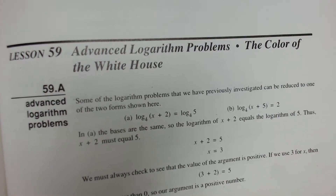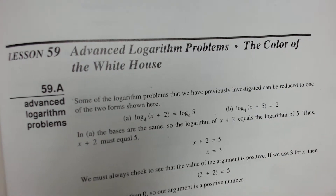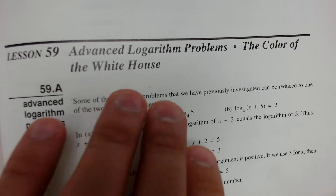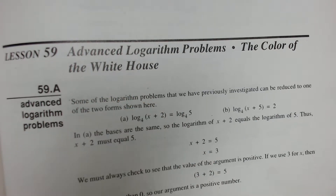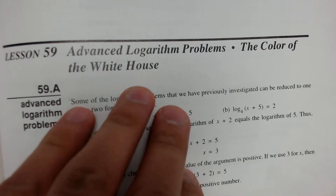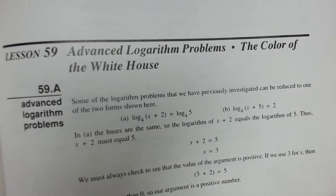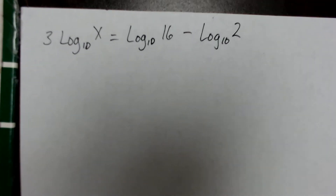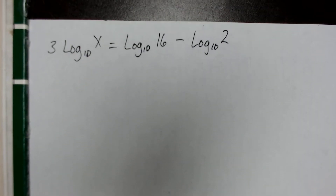Advanced math lesson 59: advanced logarithm problems and the color of the white house. We should just rename this lesson to 'all about logarithms' — the color of the white house is a misnomer. They use it as an analogy to talk about logarithms whose exponents are logarithms, and we'll get to that. Advanced logarithm problems are just combinations of two different log rules.